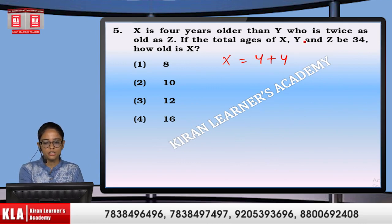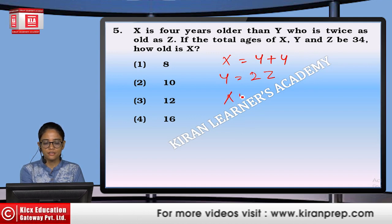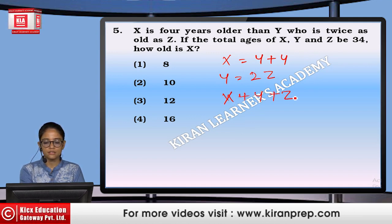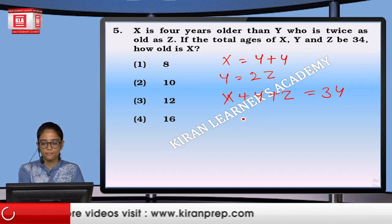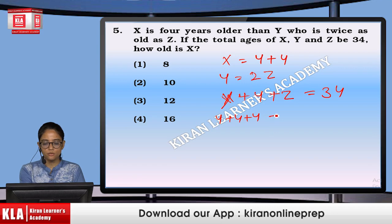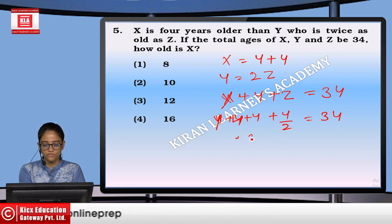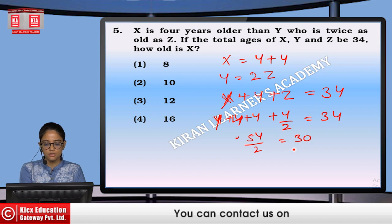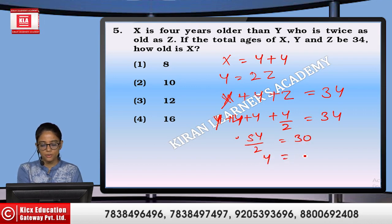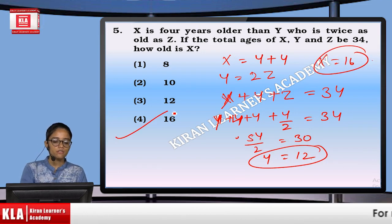X is 4 years older than Y, who is twice Z. X plus Y plus Z equals 34. Writing X as Y plus 4, and Z as Y over 2: Y plus 4 plus Y plus Y by 2 equals 34. So 5Y by 2 equals 30, giving Y equals 12. Therefore X equals 16. Option number 4.